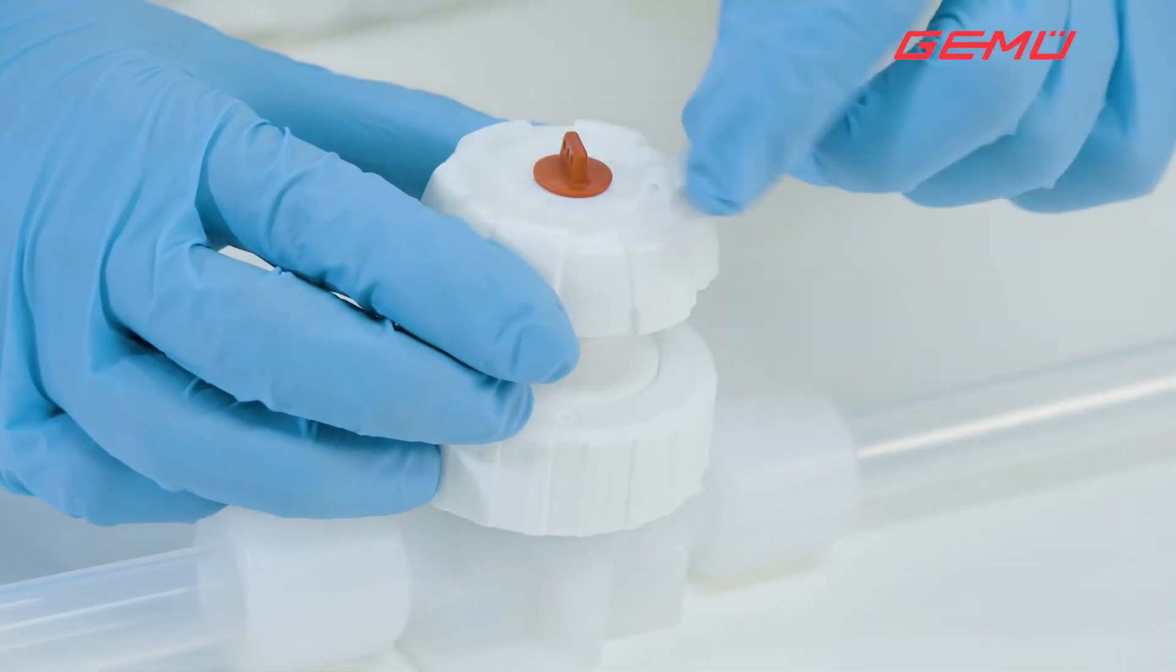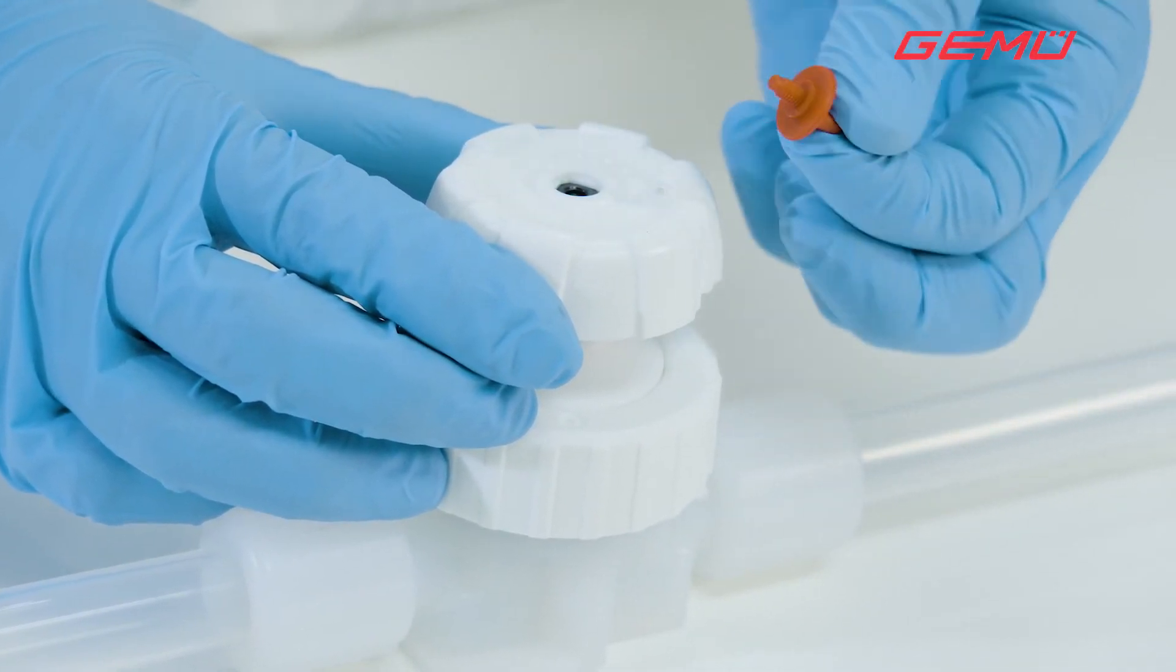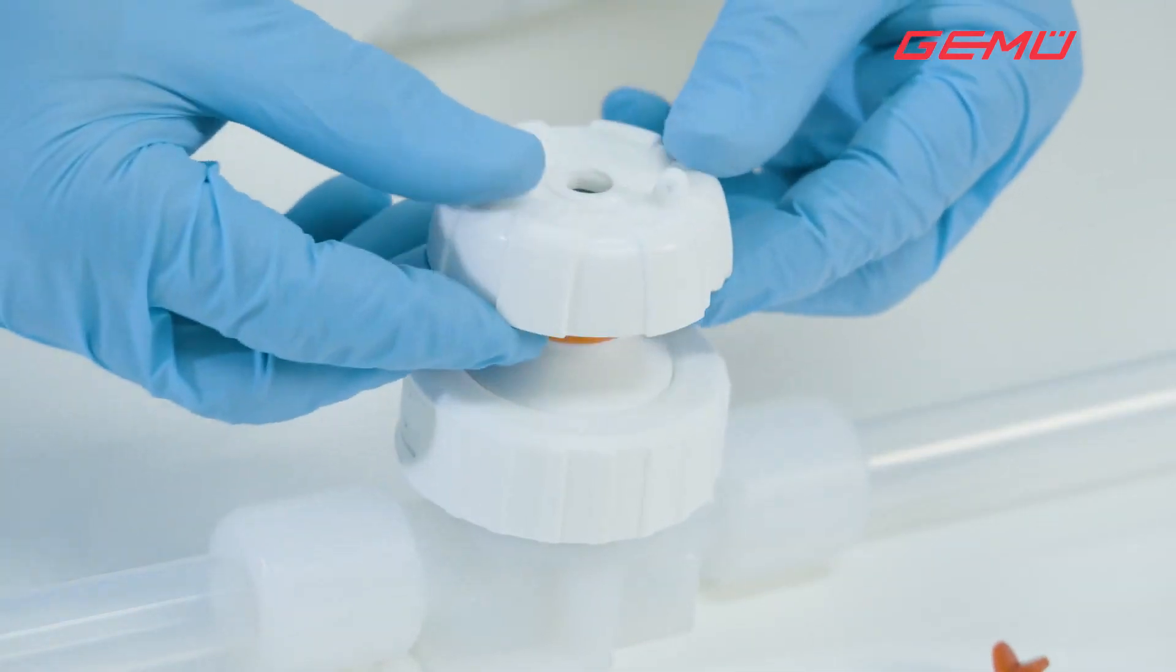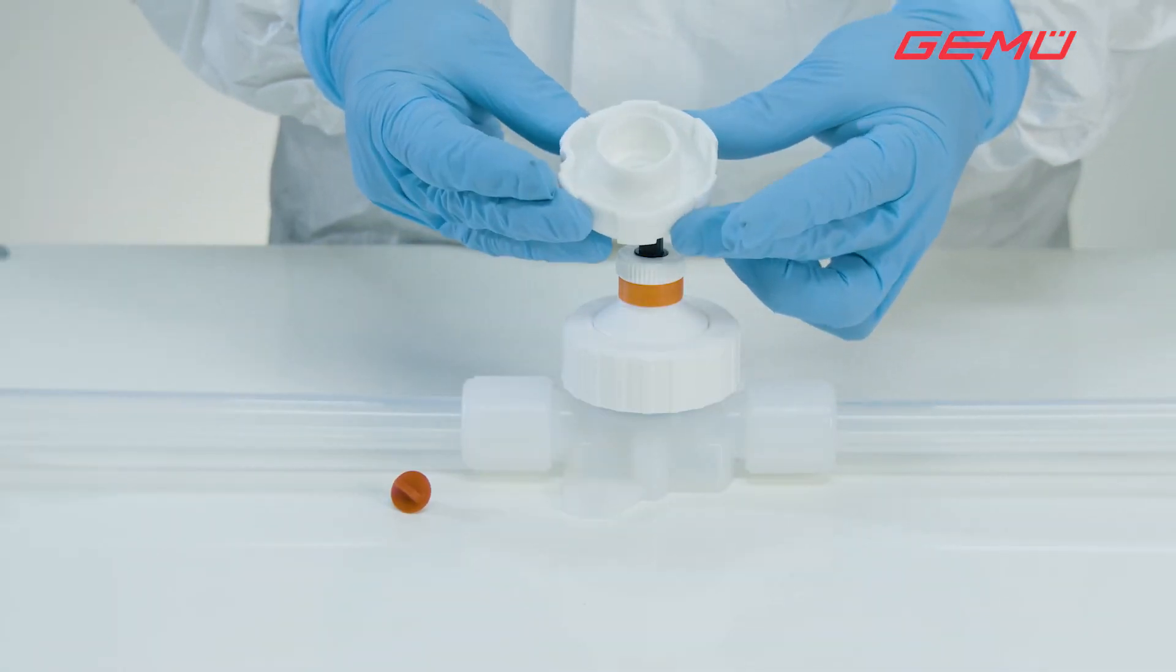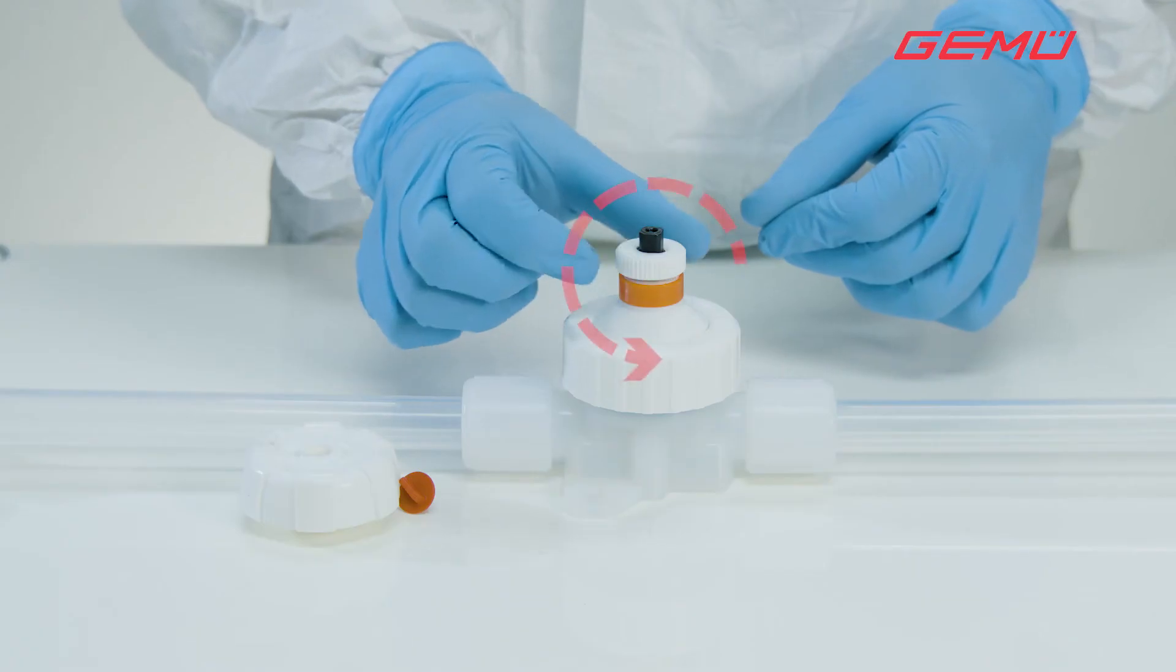Undo the red fixing screw on the handwheel and remove the handwheel. Now slightly screw the knurled screw beneath the handwheel anti-clockwise and upwards.